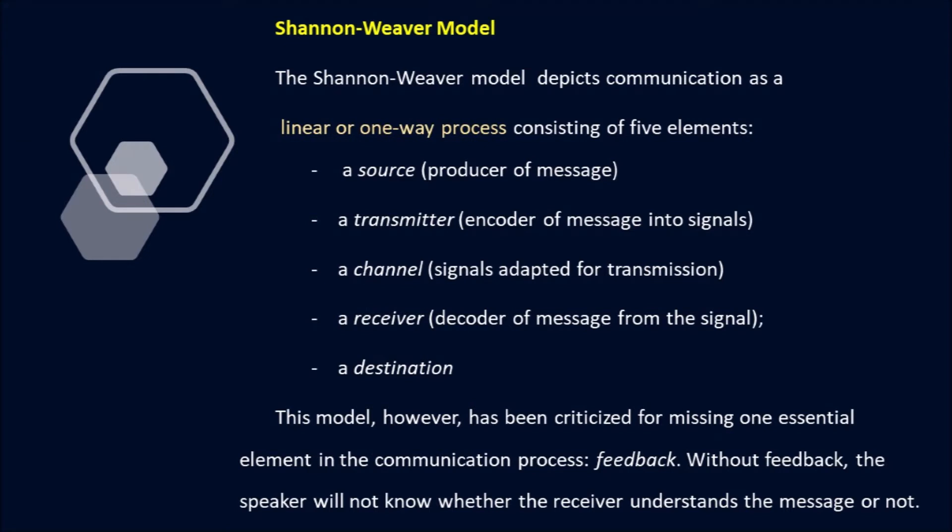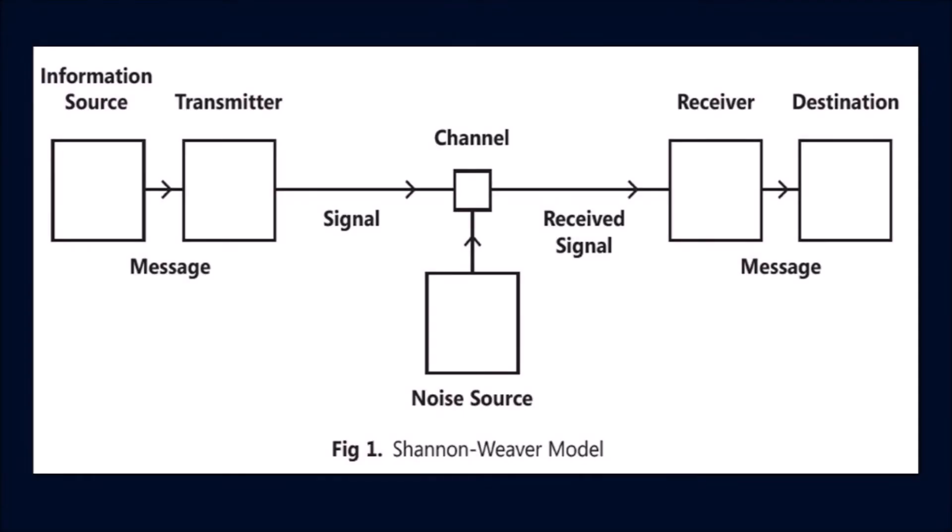The Shannon-Weaver Model depicts communication as a linear or one-way process consisting of five elements: a source or producer of message, and a transmitter or encoder of message into signals.